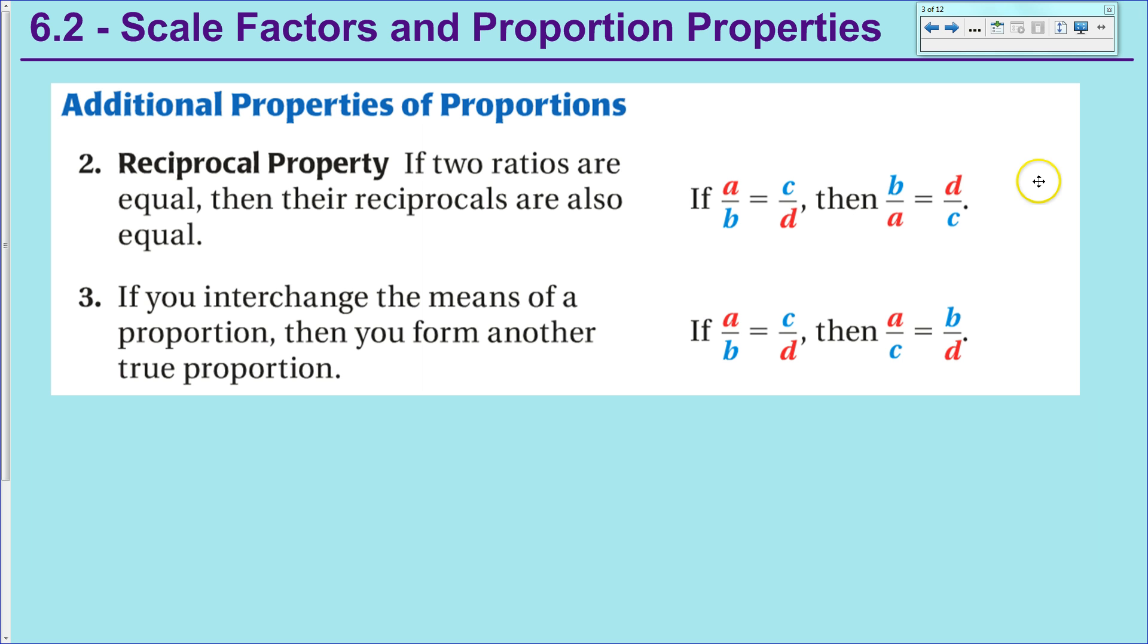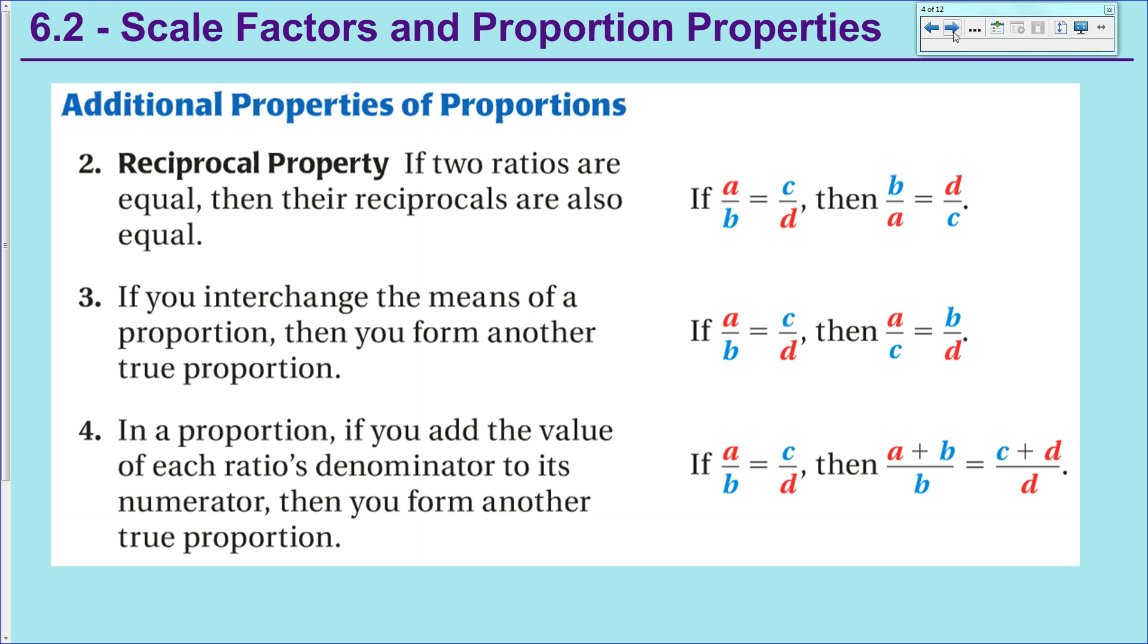You can also do this with the extremes by combining the reciprocal property with it. And the third and final proportion property is kind of an odd one. It says that if you take the denominator of one of the ratios and add it to the numerator, if you do that on both sides, you also end up with a true proportion. Now the only thing that you're going to need to know these for is to kind of fill in the blank. They're going to give you an if statement and say if this proportion is true, then what does the second proportion need to be in order to still be valid?